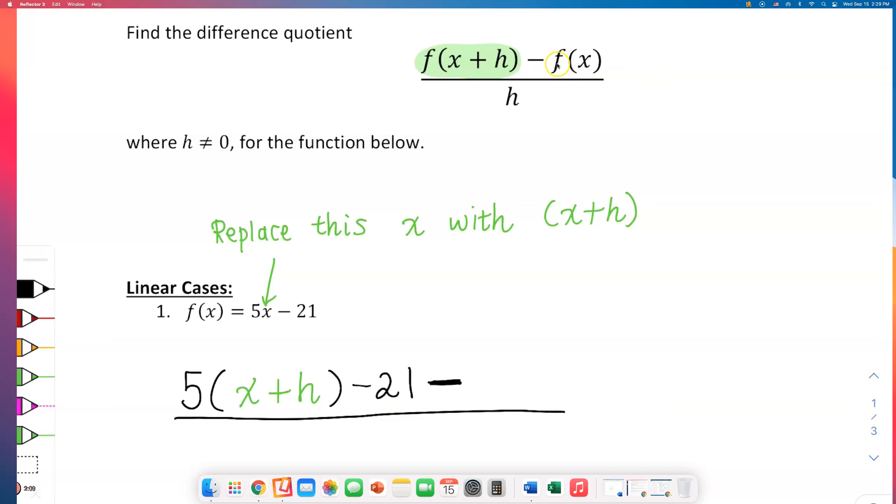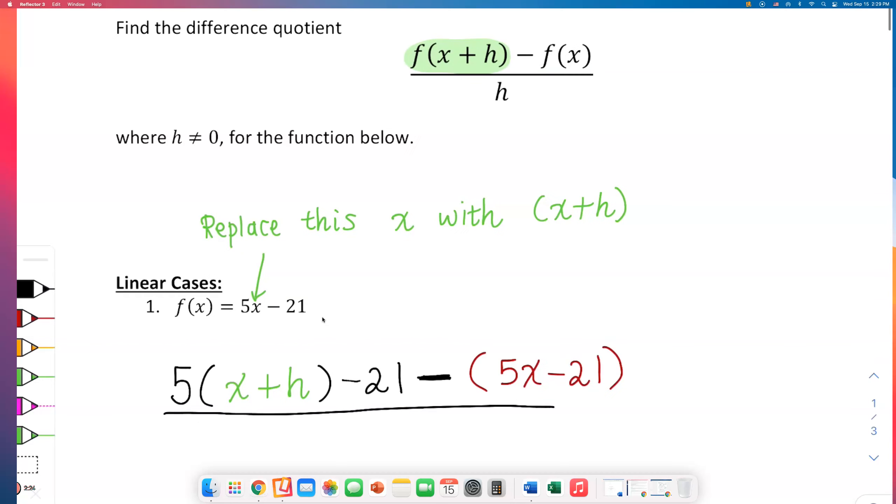What's after the green circle part? Minus sign. Draw the minus sign. What am I subtracting? After minus sign I need to subtract f of x. Now what is f of x? f of x is 5x minus 21. Put that 5x minus 21.